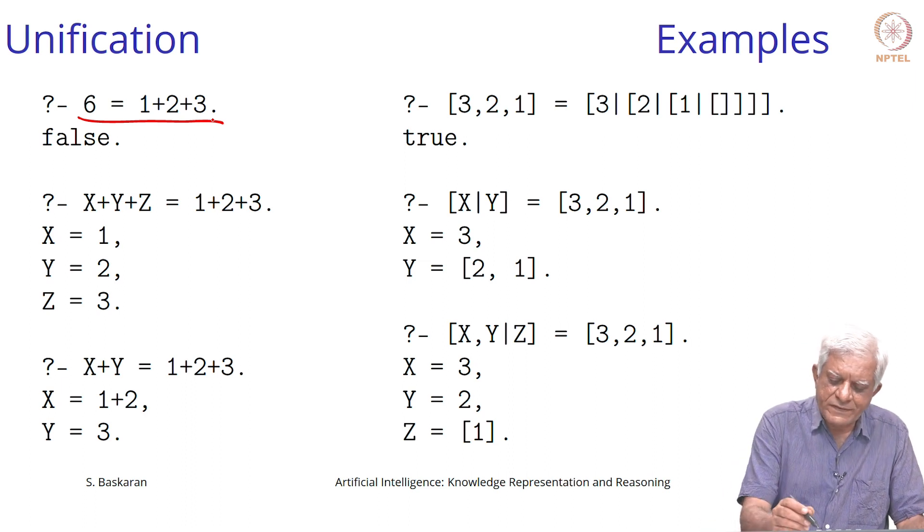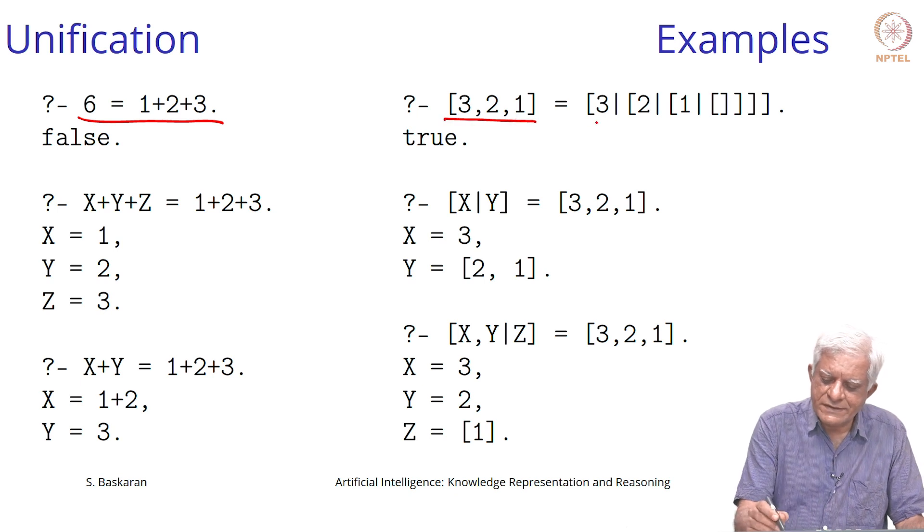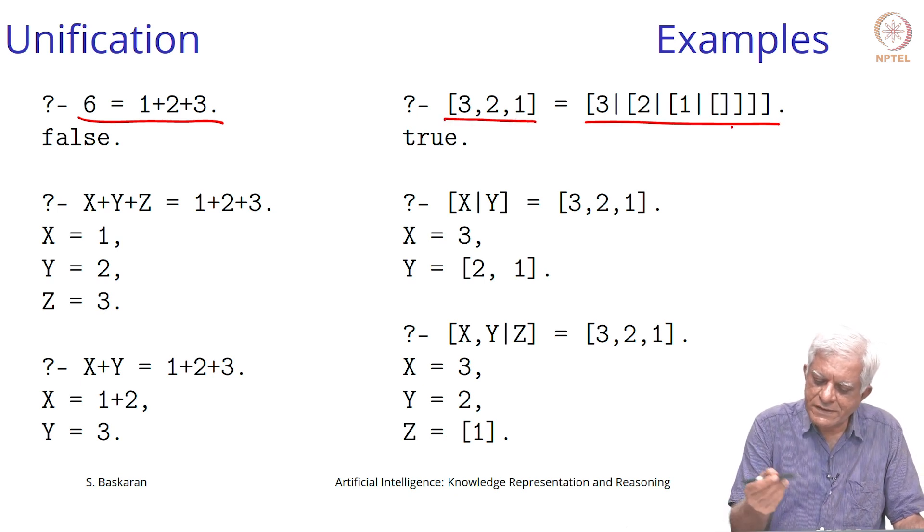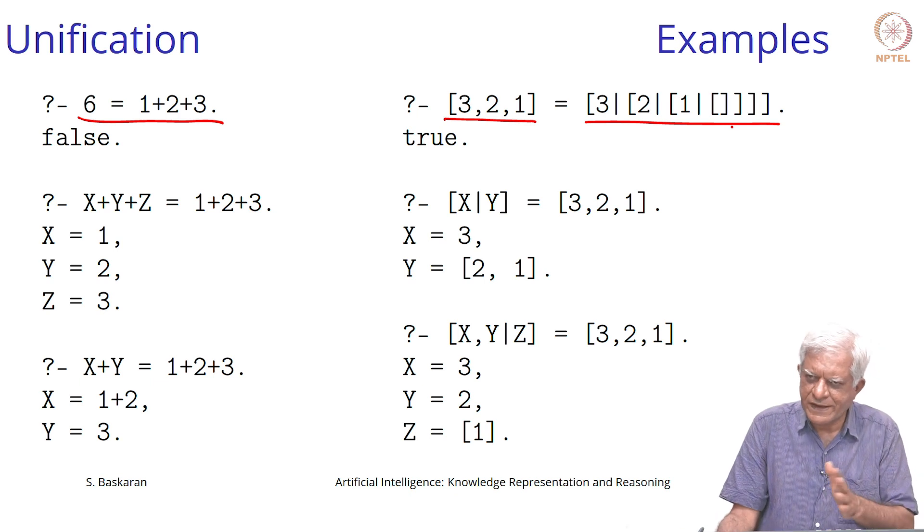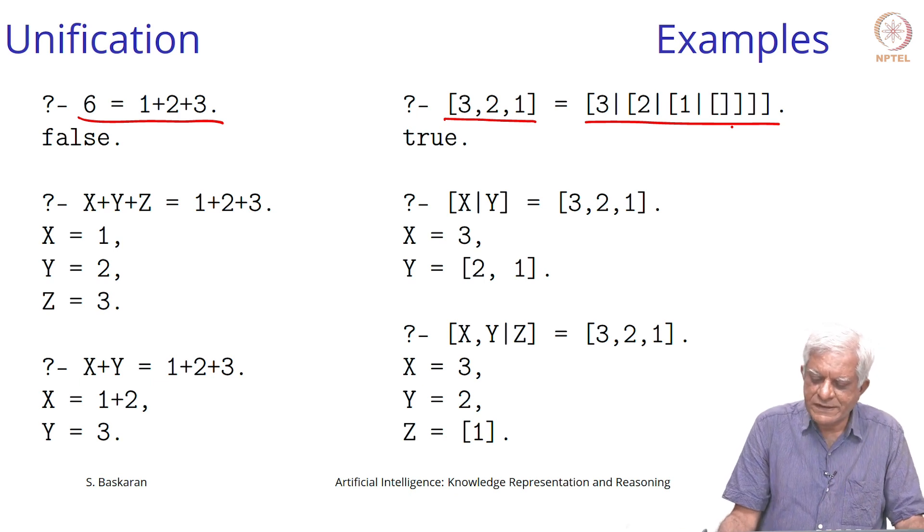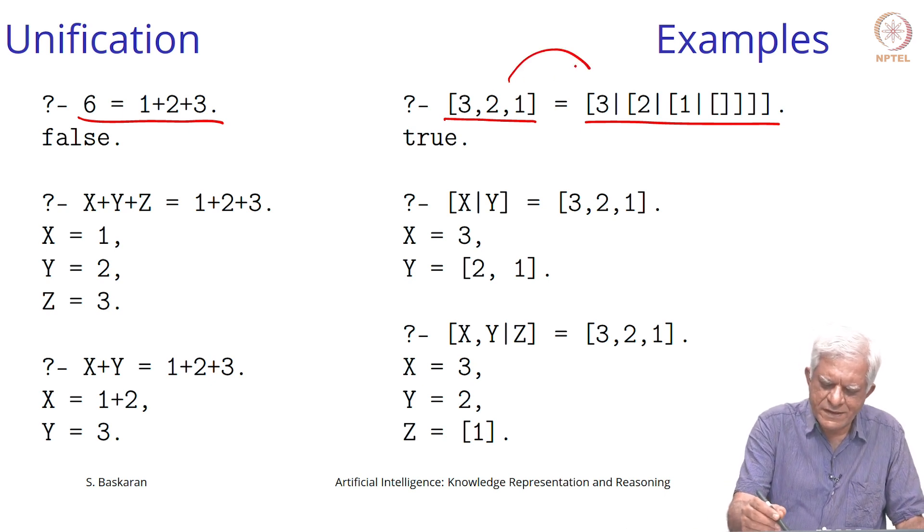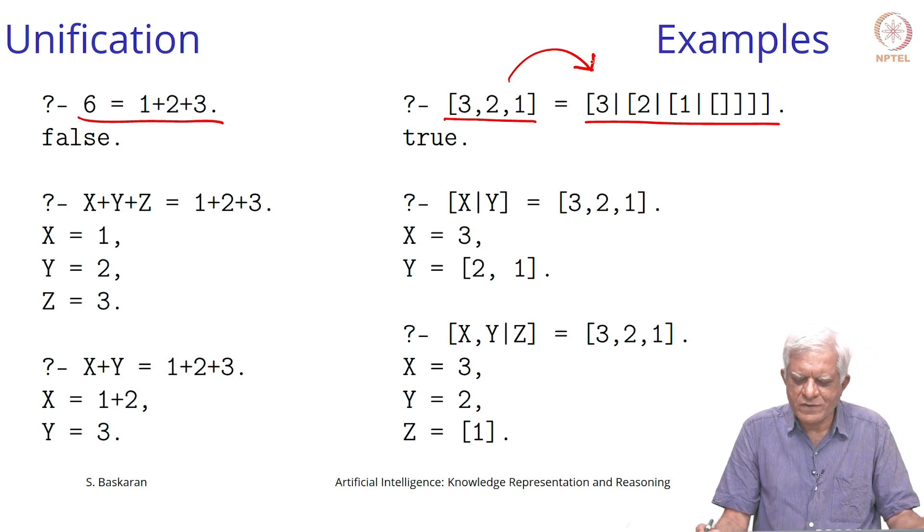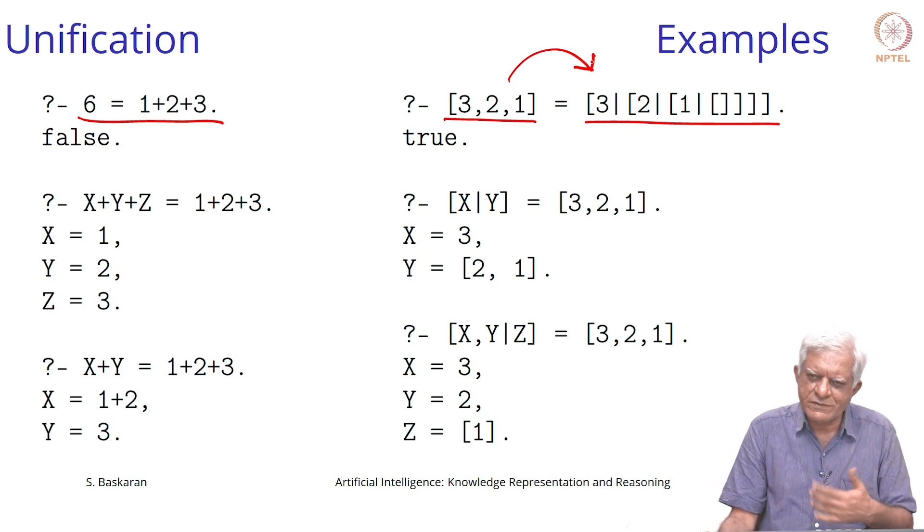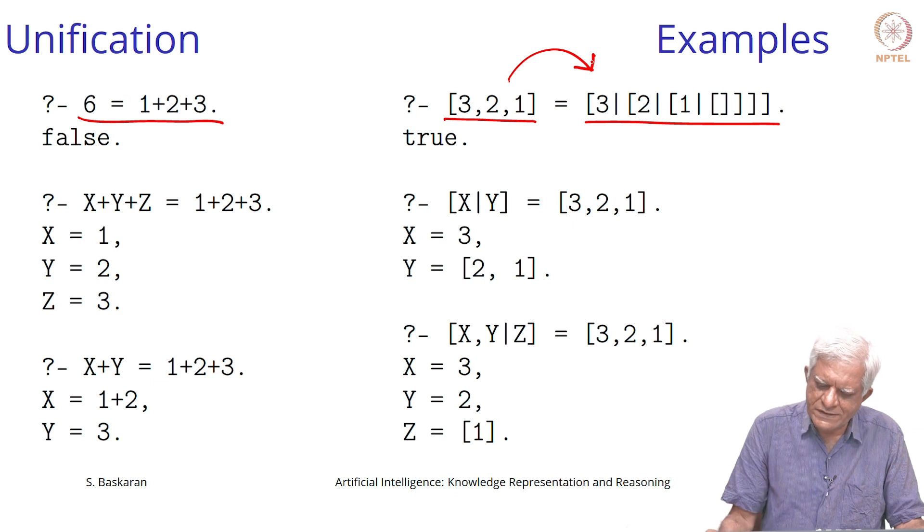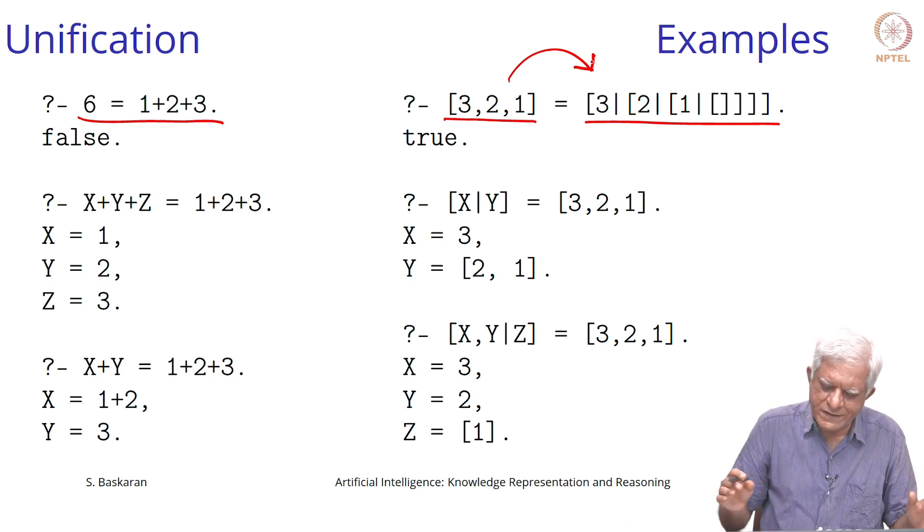On the other hand, if you said is this list of 3, 2, 1 the same as a list written in a different format in the head tail format, it will say yes. They can be unified because internally this is the same as this. Whether we talk about cons pairs or dotted pairs or the head tail notation, it all amounts to the same binary tree.